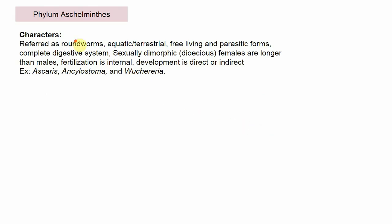The next phylum is Aschelminthes, generally referred to as roundworms. They are aquatic or terrestrial, and may be free-living or parasitic. They have a complete digestive system — mouth and anus — unlike Platyhelminthes which has an incomplete digestive system. They are sexually dimorphic — males and females are separate and easily distinguished; females are slightly longer than males. This condition is also called dioecious. Fertilization is internal and development is direct or indirect. Examples: Ascaris (roundworm, causes ascariasis), Ancylostoma (hookworm), and Wuchereria (causes filariasis, also called elephantiasis).